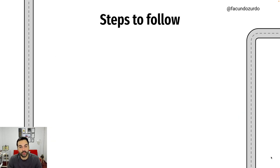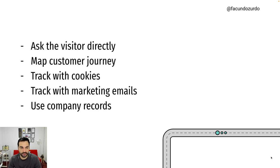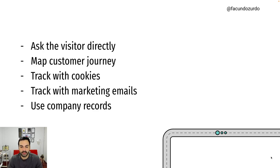If we want to implement a personalization strategy, we have to follow certain steps. The first step is to collect data from our visitors. We have different ways of doing it: we can ask visitors directly, we can map the customer journey based on where they live or their previous purchases, we can track certain paths on our website with cookies, or we can track with marketing emails — different strategies to get data and information from our users and visitors.